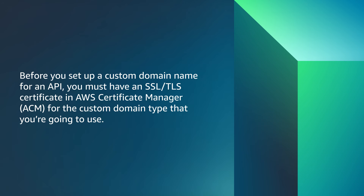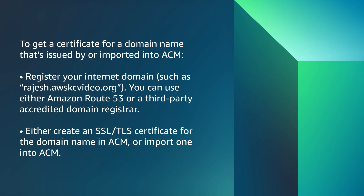Before you set up a custom domain name for an API, you must have an SSL/TLS certificate in AWS Certificate Manager (ACM) for the custom domain type that you are going to use. To get a certificate for a domain name issued by or imported into ACM, register your internet domain such as rajesh.awskcvideos.org. You can use either Amazon Route 53 or a third-party accredited domain registrar. Then either create an SSL/TLS certificate for the domain name in ACM or import one into ACM.